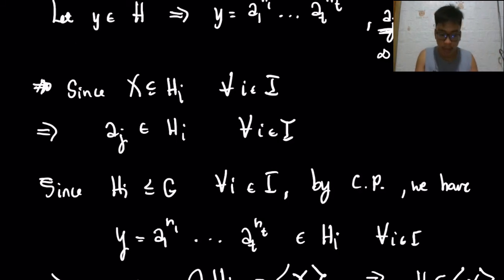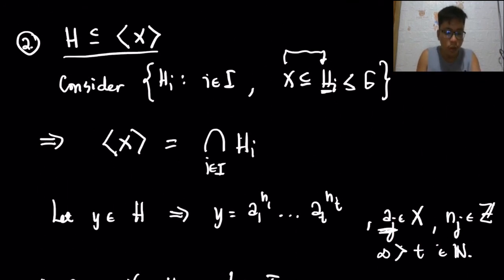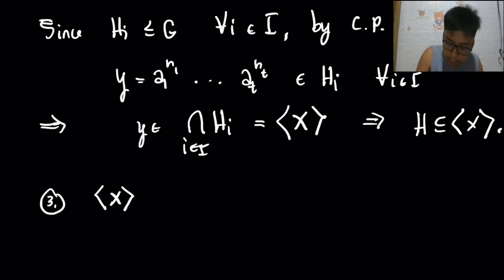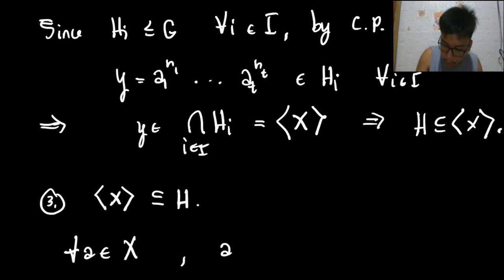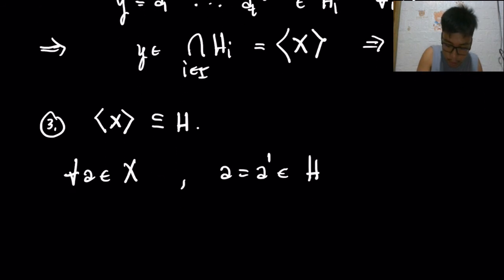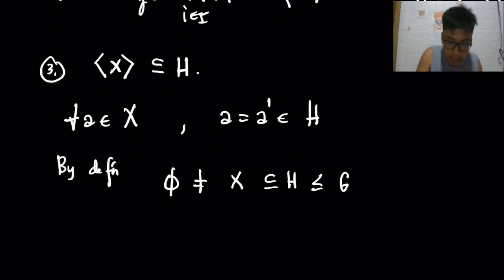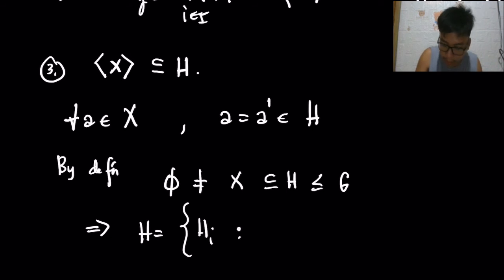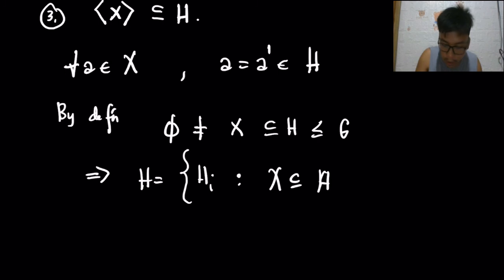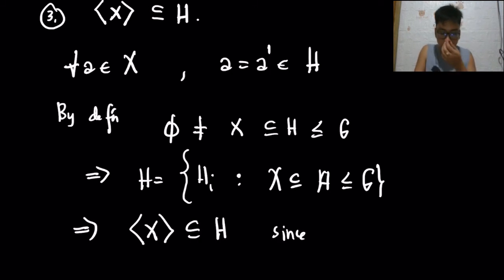We have shown that claim holds. Now we show the reverse: the subgroup generated by X is also a subset of H. For all A in X, we can write A equals A to the 1, and since 1 is an integer, A is in H. Since X is non-empty and is a subset of H, and H is a subgroup of G, this implies H belongs to the collection of subgroups of G containing X. Therefore the subgroup generated by X is a subset of H, since the subgroup generated by X is the smallest subgroup of G that contains X.